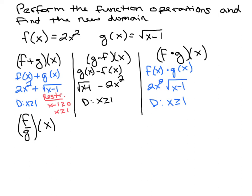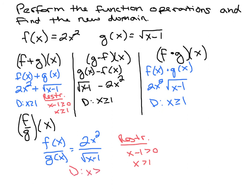Last but not least, we have f of x divided by g of x, which is 2x squared divided by the square root of x minus 1. Now our new domain, our restrictions: x minus 1 has to be greater than 0, not equal to, because it's in the denominator. Since it's in the denominator, this can't be equal to. So x is greater than 1. Our new domain is x is greater than 1.